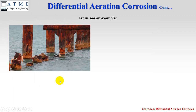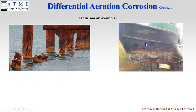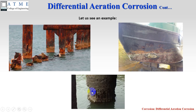Let us see some examples. A metallic bridge collapsed due to water line corrosion. Another example shows a boat that is corroded due to water line corrosion, caused by the difference in oxygen concentration — one inside the water and the other outside.